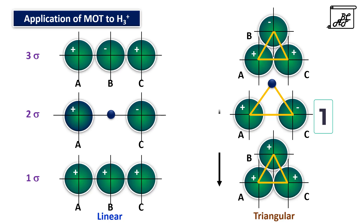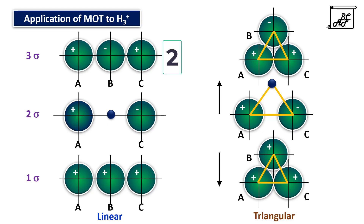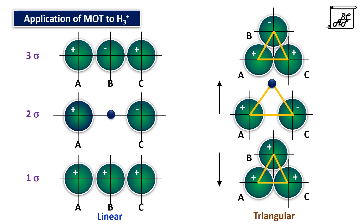In triangular arrangement the net anti-bonding character increases compared to linear arrangement. In case of 3 sigma anti-bonding molecular orbital in linear arrangement, it is anti-bonding between A and B and anti-bonding between B and C, with no relation between A and C — two net anti-bonding characters. In triangular arrangement, it is anti-bonding between A and B, anti-bonding between B and C, but there is bonding between A and C — only one net anti-bonding character. So compared to linear, in triangular arrangement the energy of the system decreases.